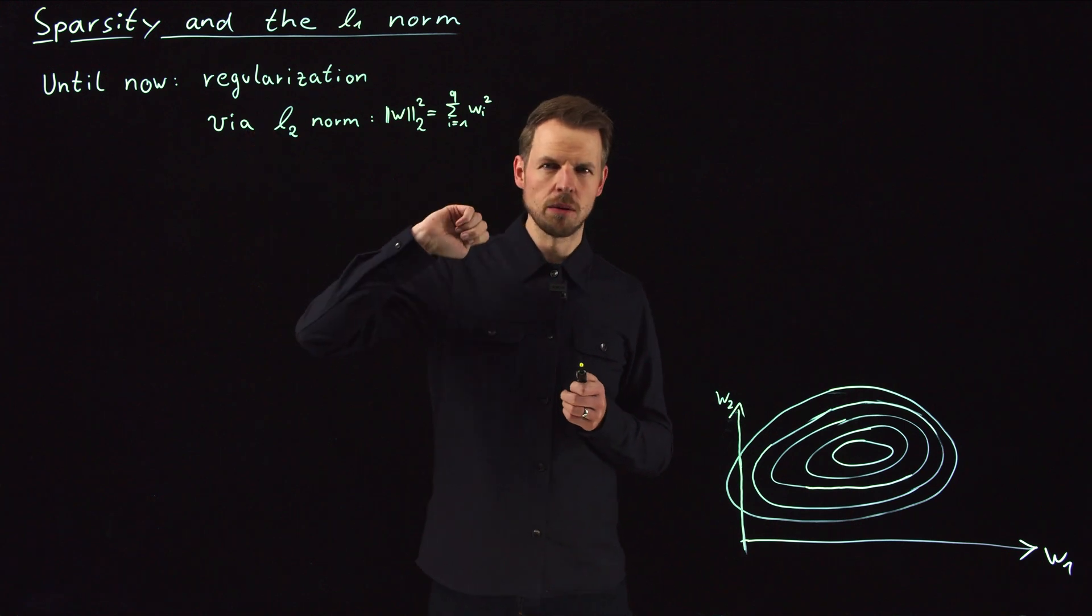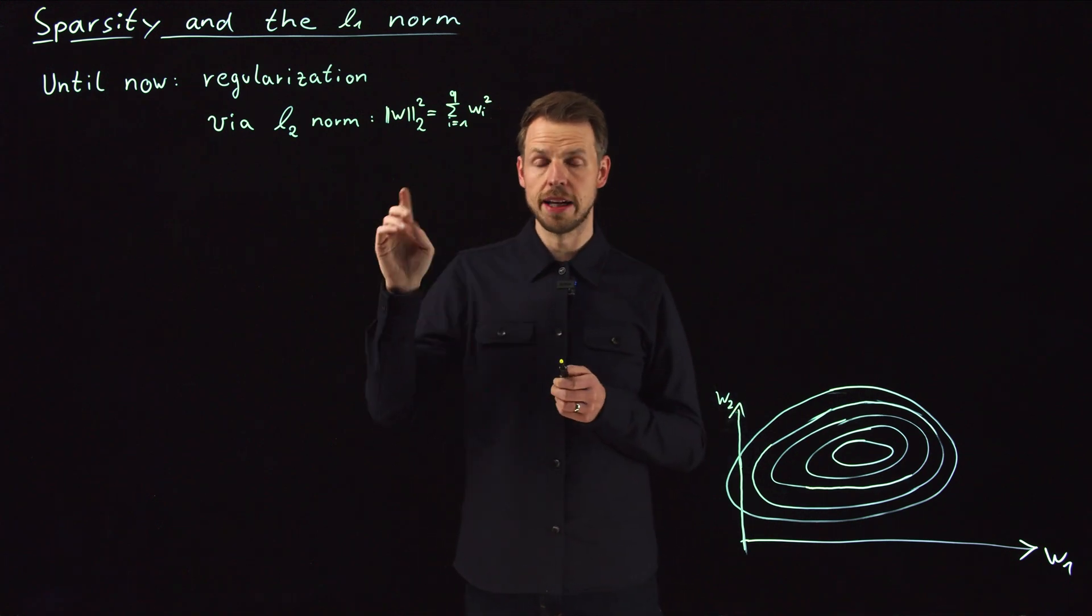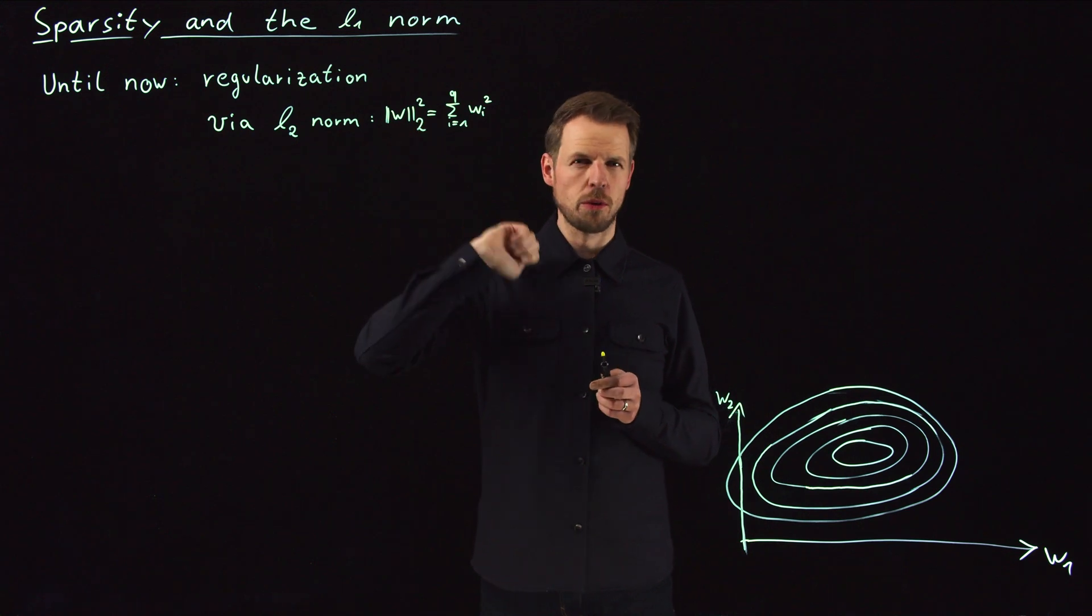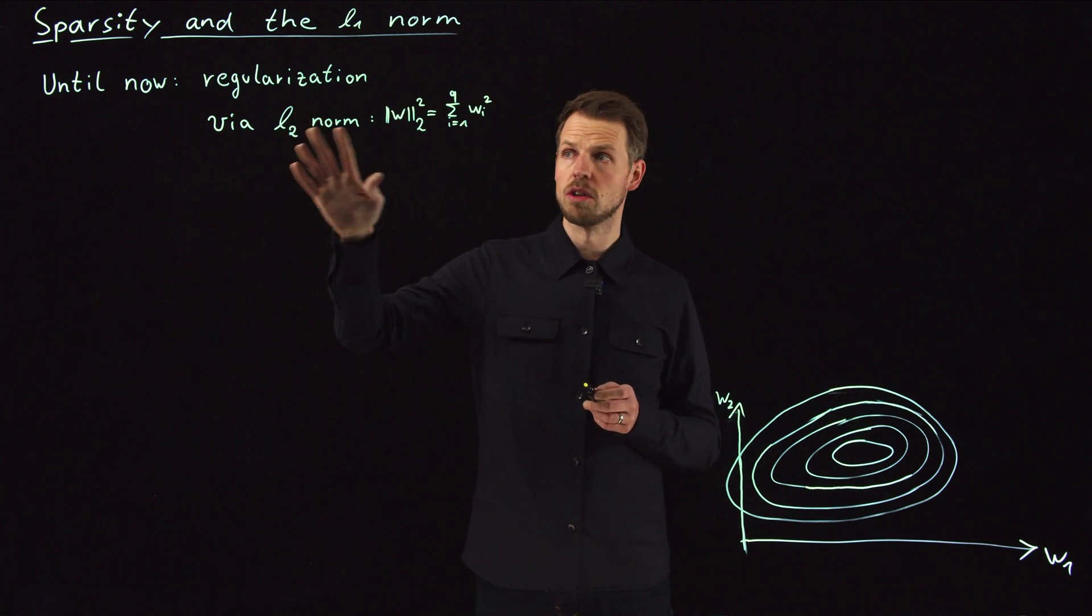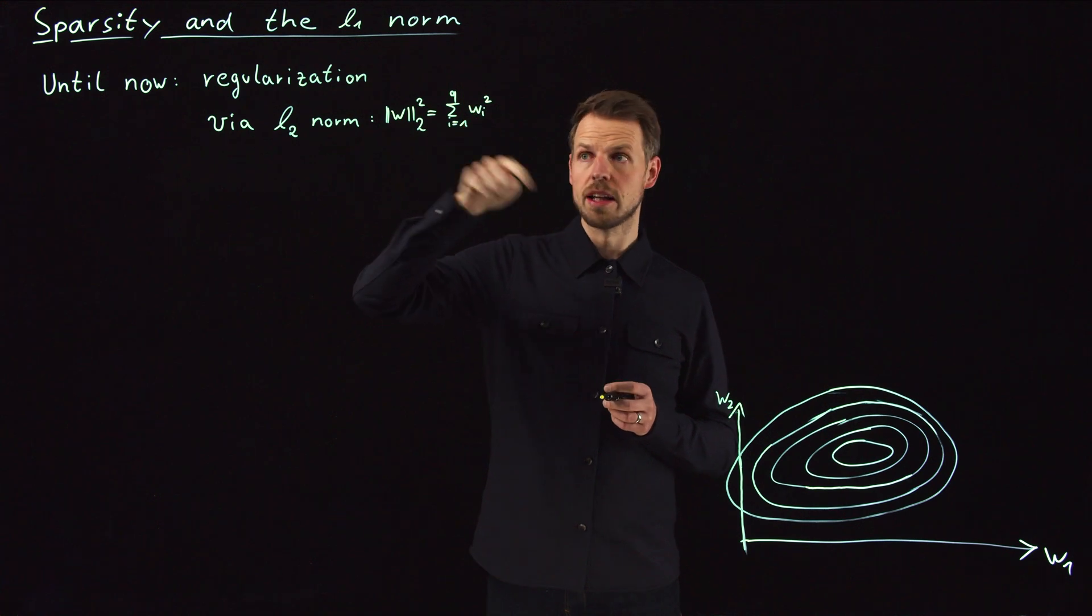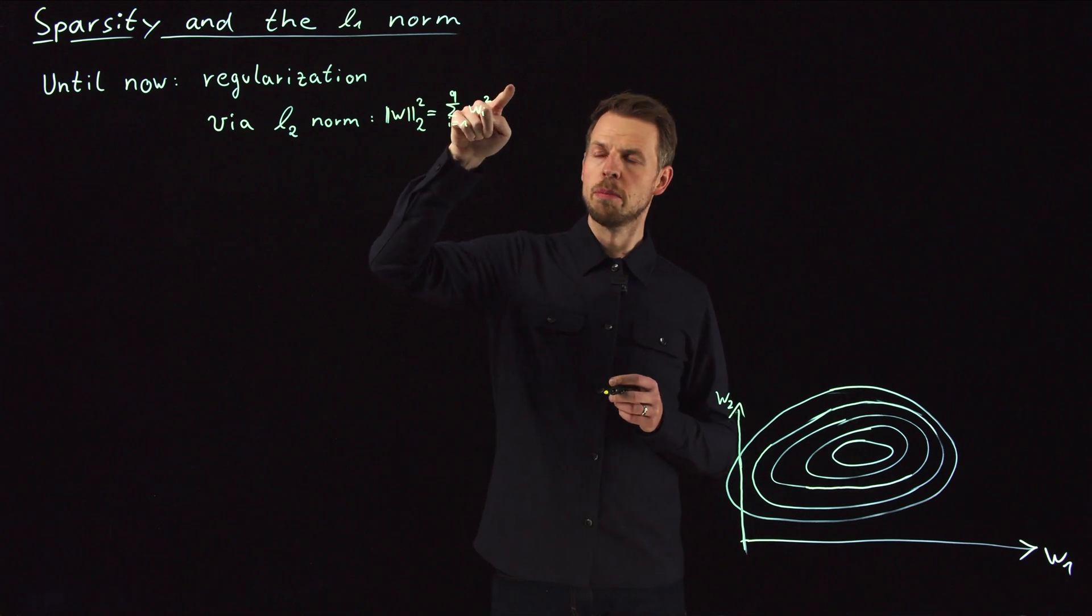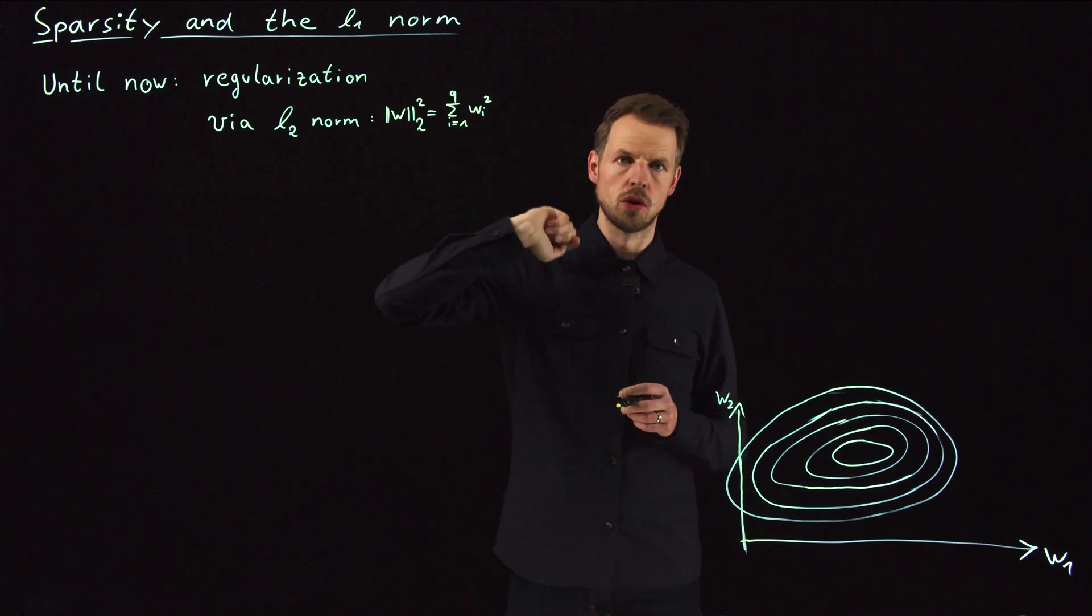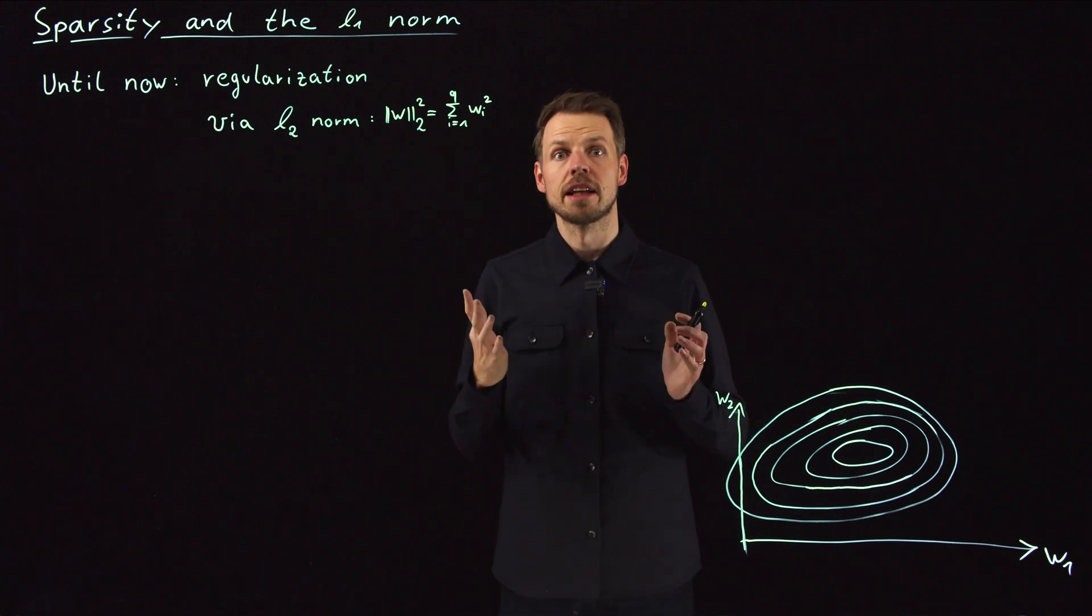What have we done until now when we talk about regularization? This means you have a loss function, you minimize L which is often the mean squared error, and then you add a term with a regularization parameter. So the loss function plus lambda times, and what we have done until now was adding the 2 norm. So the sum of the squared entries of your weight matrix. The p norm is always sum of the entries raised to the pth power and then taking the pth square root. So square root of the individual element squared, which is the standard vector length as we're used to it.